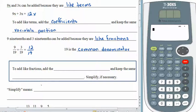9 19ths plus 3 19ths gives us 12 of those 19ths. So it works exactly the same way. To add like fractions, we add the numerators and keep the same denominator. The numerator acts like the coefficient. It tells us how many of the things we have. And the denominator acts like the variable portion. It tells us what type of thing we have.